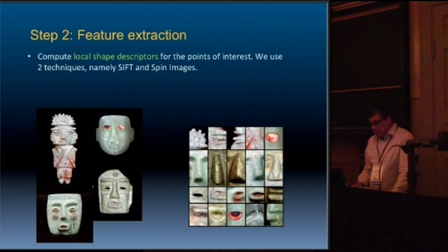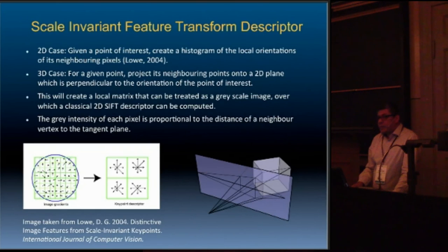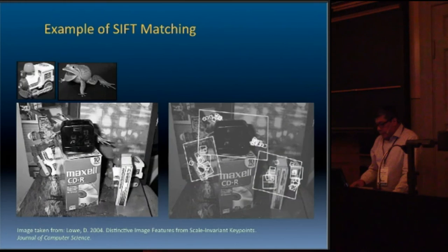We apply some algorithms to extract local shape descriptors. We use one which is very common: Scale Invariant Feature Transform, SIFT. Basically what this descriptor does, this is a picture of the original paper, you can see it's a technique to recognize objects in very cluttered, very busy scenes. For example, we have the frog. You can see the frog here.